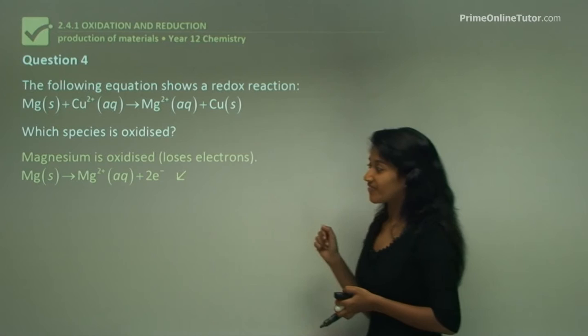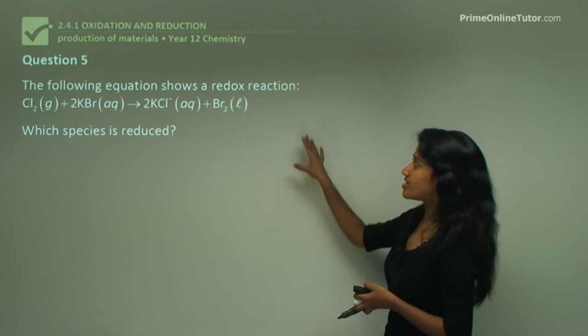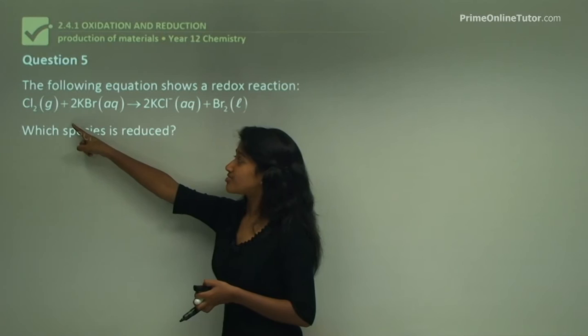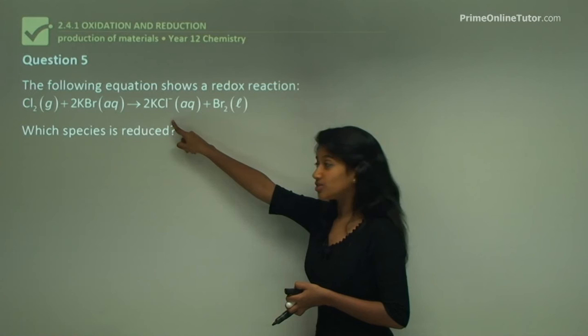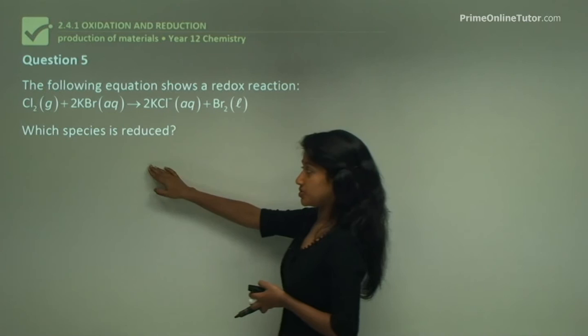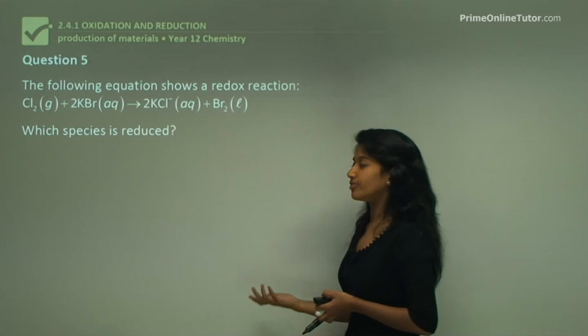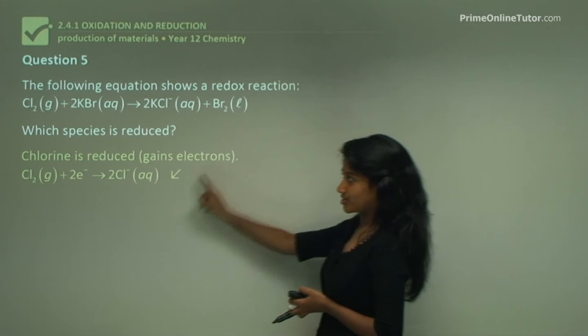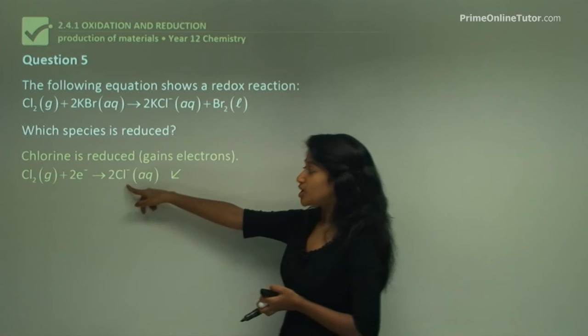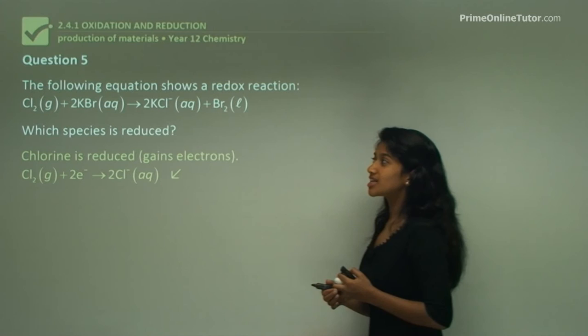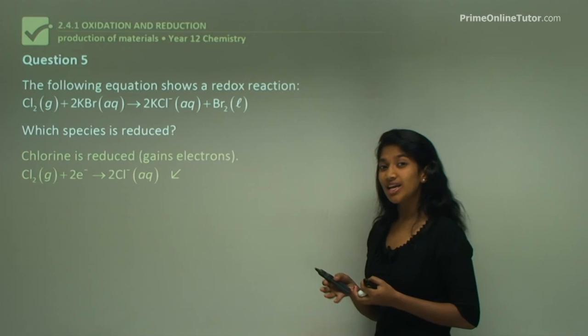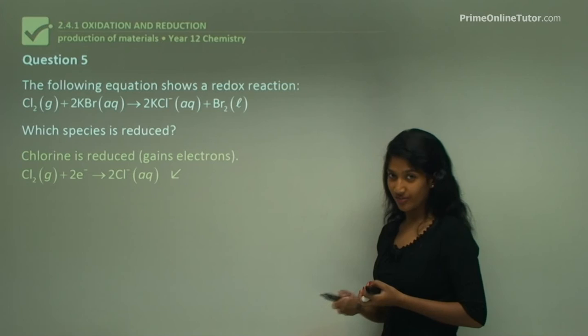Question 5: Chlorine gas reacts with potassium bromide solution to give potassium chloride solution and bromine liquid. Which species is being reduced? Reduction is the gaining of electrons. Chlorine is reduced - chlorine gas gains 2 electrons to form chloride ions. That brings us to the end of the lesson: oxidation is when something loses electrons, reduction is the gaining of electrons, and both are part of the redox reaction.